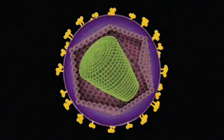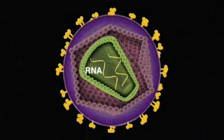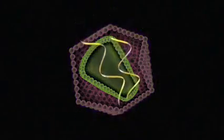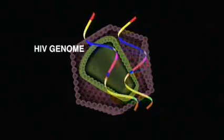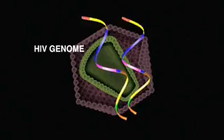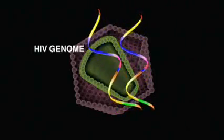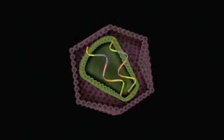The viral core contains two important features. The HIV genome is carried on two strands of RNA. These strands contain only nine genes, in contrast to the 500 genes in the typical bacterium and roughly 20,000 genes in a human cell.